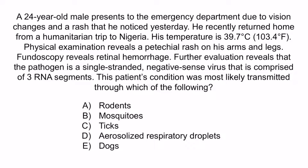Let's go through the key points. He recently traveled to Nigeria. He has a fever of 39.7 degrees Celsius, a petechial rash, and retinal hemorrhage. These findings should make you think of hemorrhagic fever. The petechial rash and retinal hemorrhage are both due to the hemorrhagic aspect, and the fever helps confirm this diagnosis. We're also told that the pathogen is a single-stranded, negative-sense virus comprised of three RNA segments — in other words, we're dealing with a member of the bunya virus family.